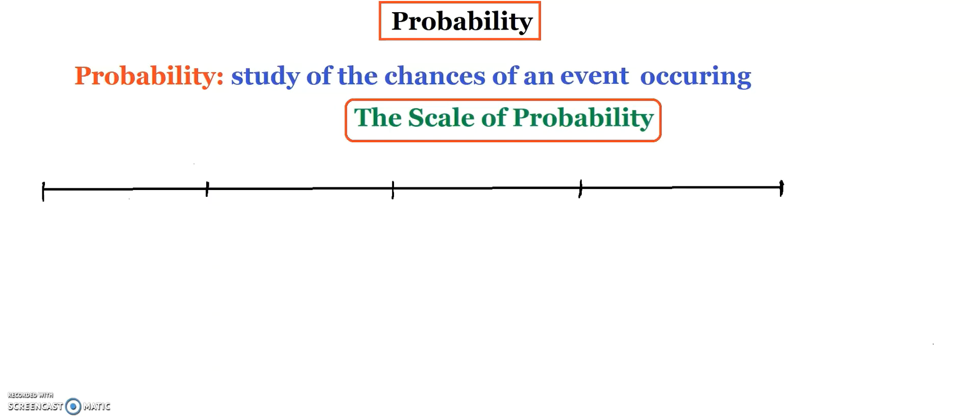In this video, I will be talking about probability — the definition of probability, the scale of probability, and a table which will have word, fraction, decimal, and percent. Then we're going to be talking about two types of probability: theoretical as well as experimental. Then I'm going to be showing you some examples, followed by some sample MPT questions. The definition of probability is the study of the chances of an event occurring.